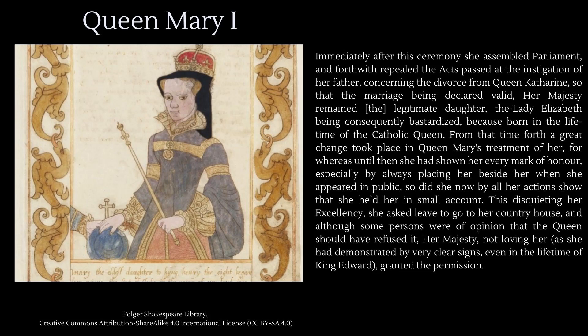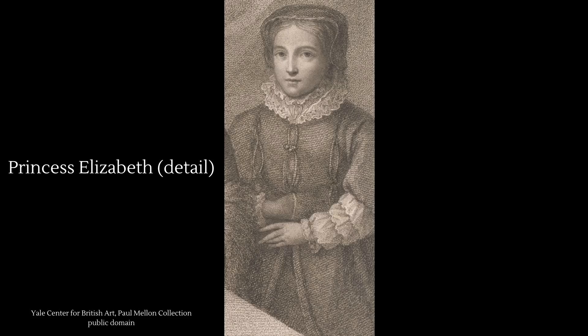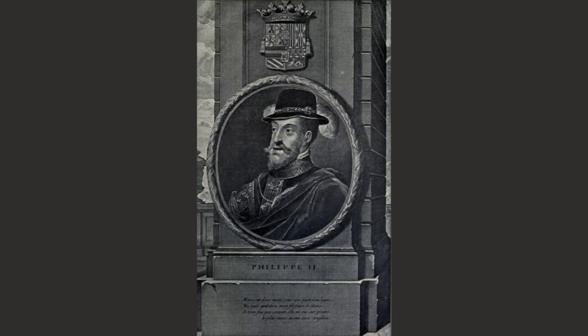This disquieting Her Excellency, she asked leave to go to her country house, and although some persons were of opinion that the Queen should have refused it, Her Majesty, not loving her as she had demonstrated by very clear signs even in the lifetime of King Edward, granted the permission. Elizabeth left court in December, pausing on her way to her house at Ashridge to write to Mary asking for additional goods to furnish her chapel, but the Queen was increasingly sceptical of her sister's apparent conversion.